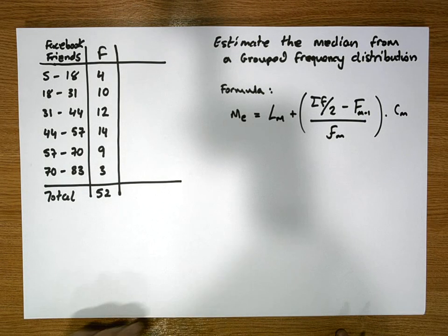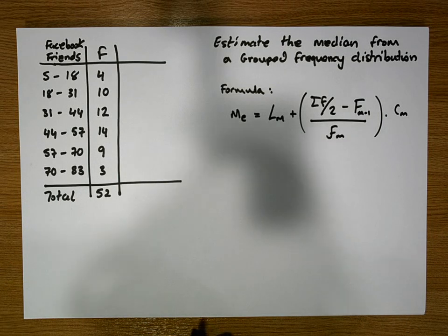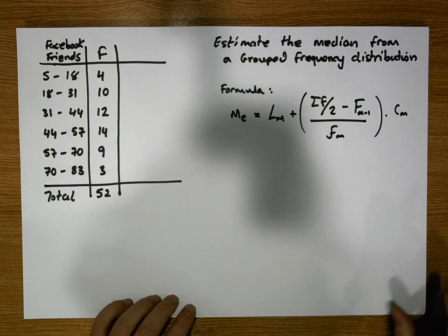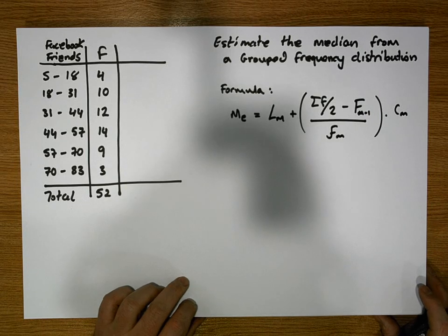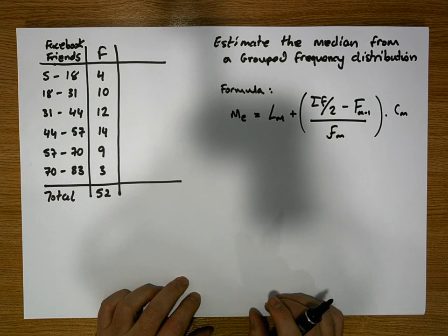Now this looks pretty complicated, but it's actually straightforward enough. There are a number of parts to this formula. The first thing we will need to do is calculate where the median class should be.